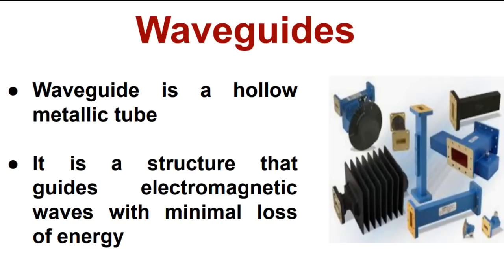Microwaves are transmitted only through hollow metallic tubes, i.e. waveguides of uniform cross section, with minimum loss. Waveguides are very important to transmit and receive microwave signals. A waveguide is a hollow metallic tube — a structure that guides electromagnetic waves with minimal loss of energy in higher frequency ranges.